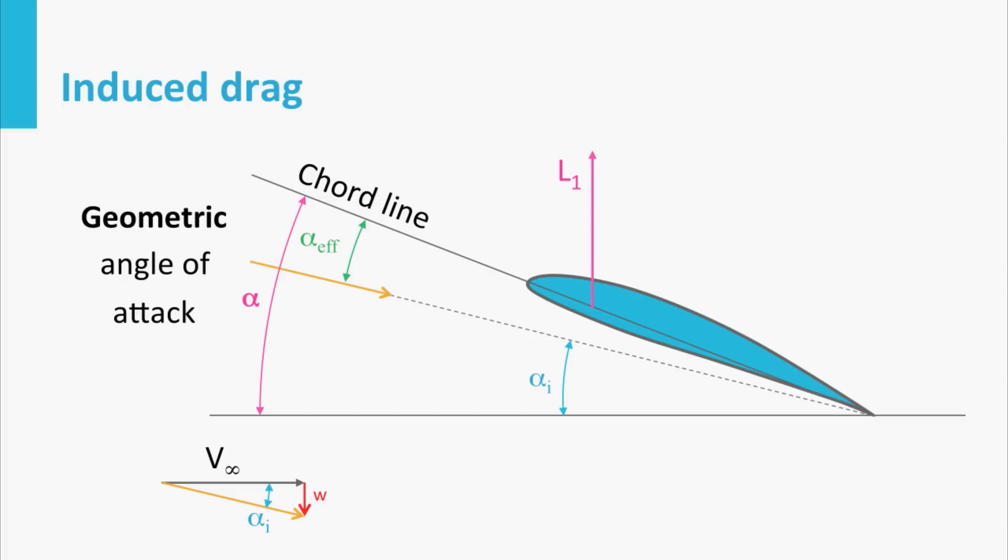The result is that the airfoil in the wing doesn't see the flow coming in under the geometric angle, but under a smaller angle alpha minus alpha i, called the effective angle.